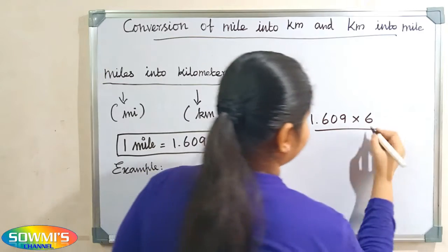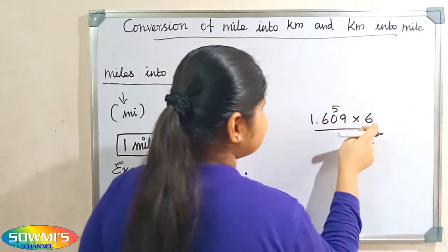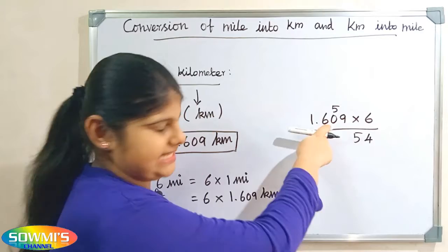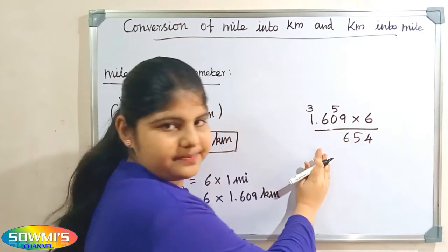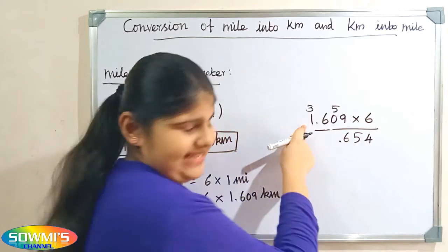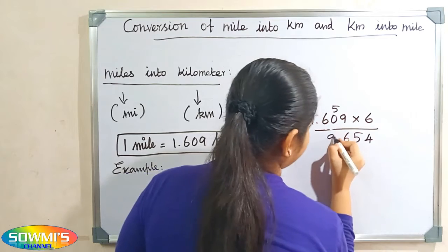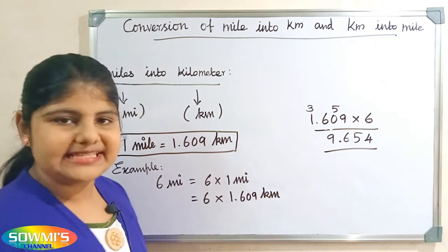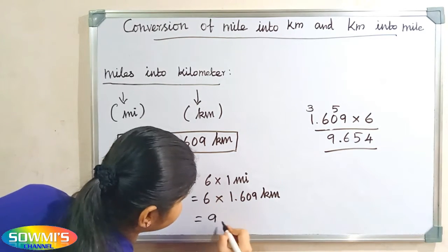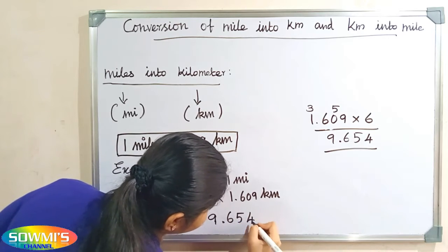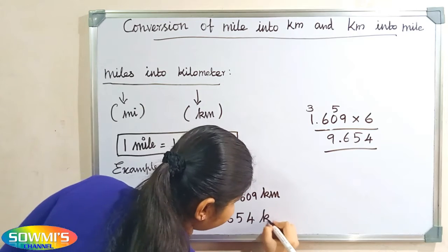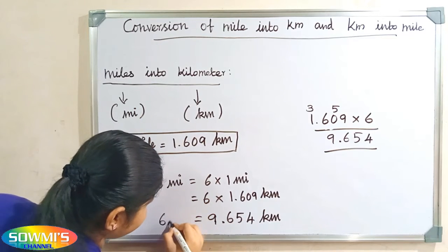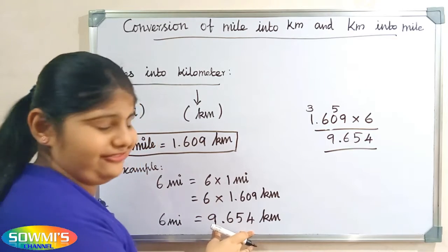Now we multiply 6 and 1.609: 6 nines are 54, 6 zeros are 0 plus 5 is 5, 6 sixes are 36, 6 ones are 6 plus 3 is 9. So when we multiply 6 and 1.609 our answer will be 9.654 kilometers. So 6 miles is equal to 9.654 kilometers.